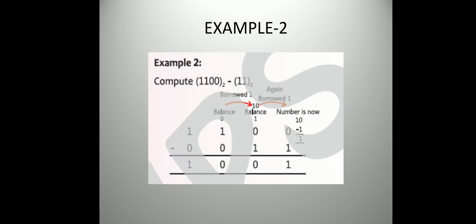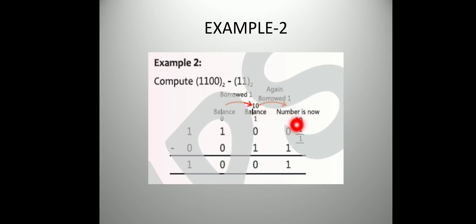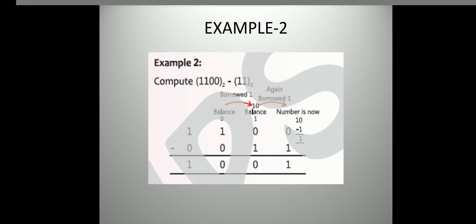Now in example 2, there are certain things we have to understand. When 0 minus 1 comes — as given in the table, 0 minus 1 is 1 — you will write it as 1. But how? You will borrow 1 from the next position. When you borrow, 10 will come. 10 minus 1: since 10 is the combination of two 1s, if we subtract 1 then 1 remains — so we write 1 in the result.